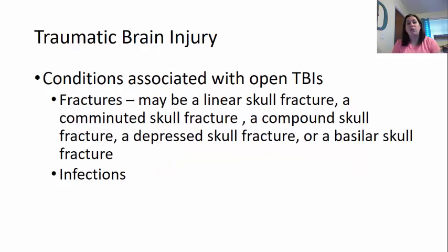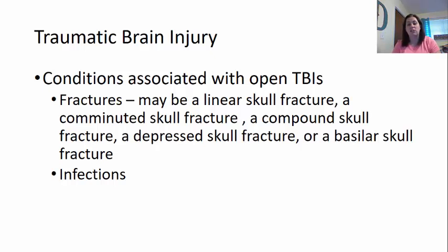Taking it a step further, we go into fractures — changing from closed to open traumatic brain injuries. These may be linear skull fractures, comminuted fractures with lots of pieces, compound fractures where the skin is broken, depressed fractures, or basilar skull fractures. This ultimately hinders the brain and makes it exposed to the outside world. One of the main complications with a fracture could be an infection, because opening the skin makes the brain tissue open to the outside, increasing the chance of infection.